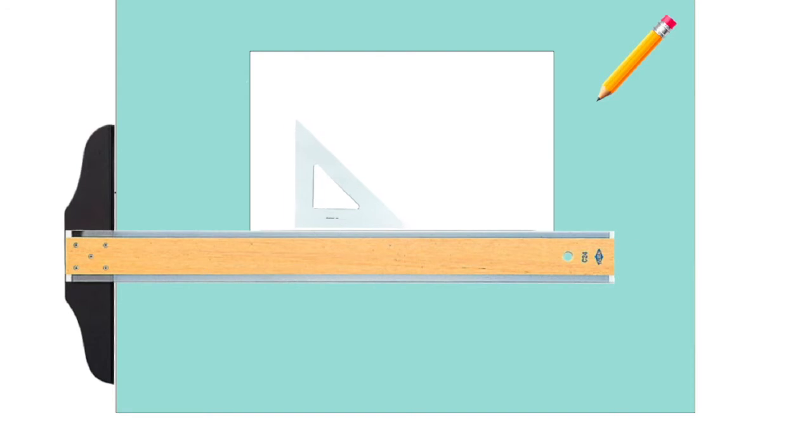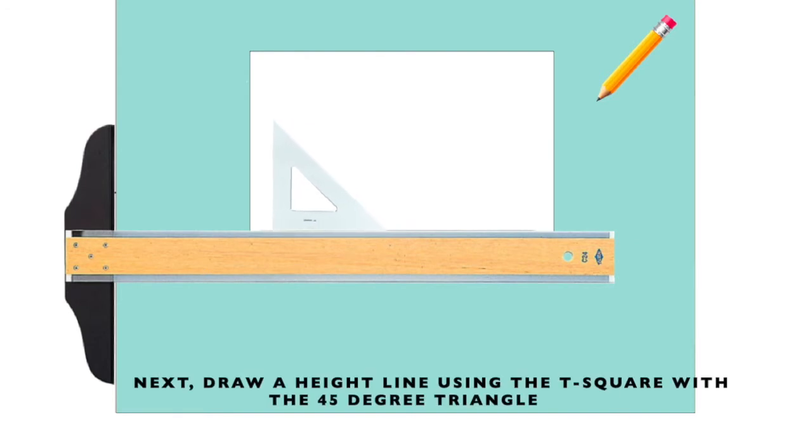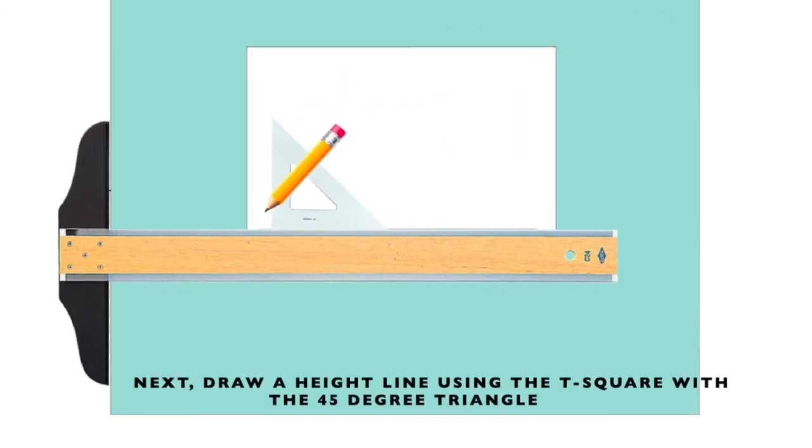Next, we'll use the 45-degree angle triangle with the T-square. We'll draw a vertical line, and we'll call this the height line.